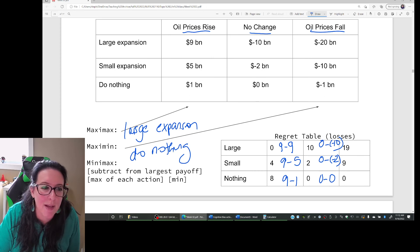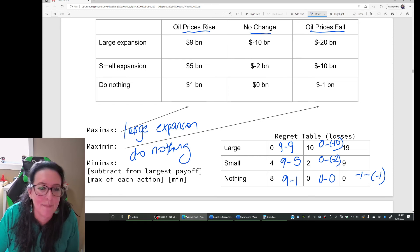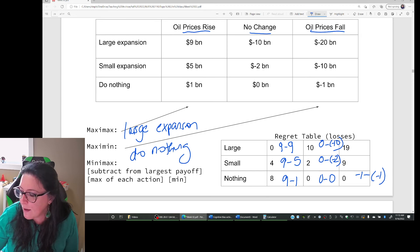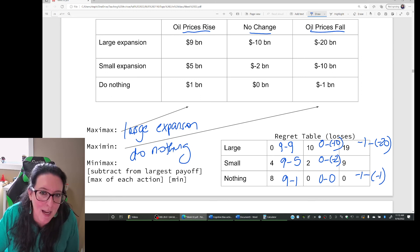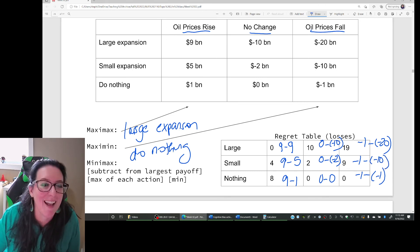Then we look at the scenario where oil prices fall. If oil prices fall, the best choice for us would have been to do nothing. Yes, the prices go down. We're still producing the same quantity. We're going to lose some money, but it's only a billion dollars. So if we do nothing, then we have negative one minus a negative one that cancels each other out, zero. But if instead we had done a large expansion, instead of doing nothing, then we go from that nothing, which was the minus one minus the negative 20. And so the regret we have here is the extra 19 billion dollars that we lost by choosing large expansion over do nothing. Same thing with the small expansion. We could have just lost 1 billion, but because we went with small expansion, we lose 10 billion. So the actual regret is 9.